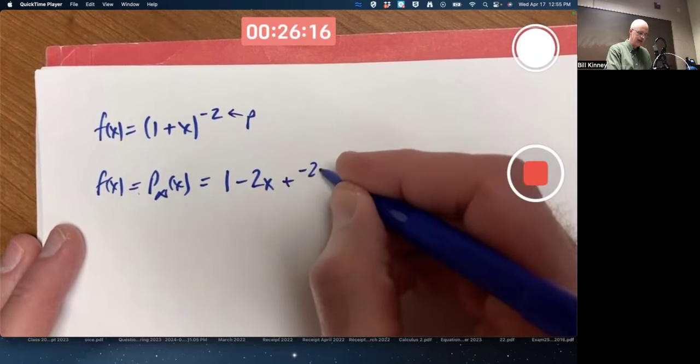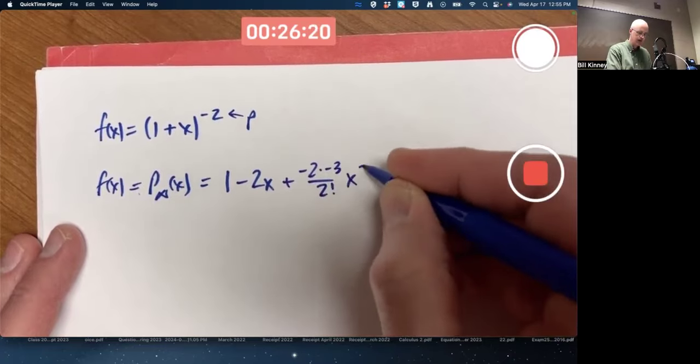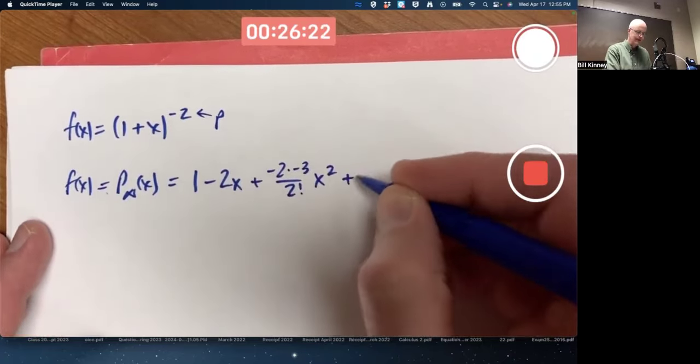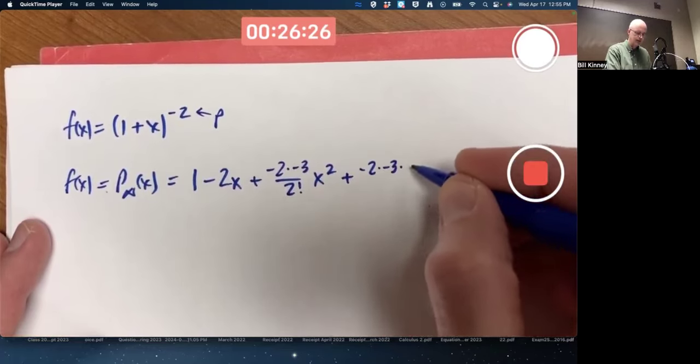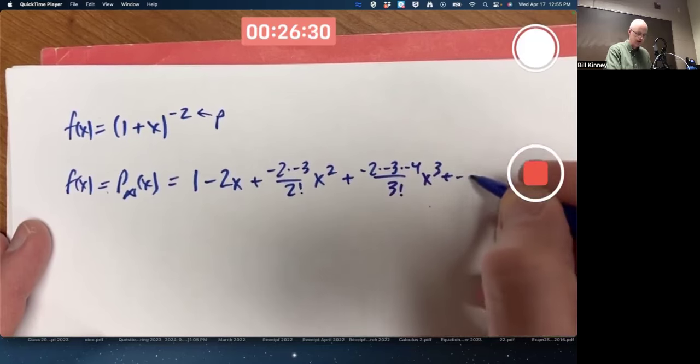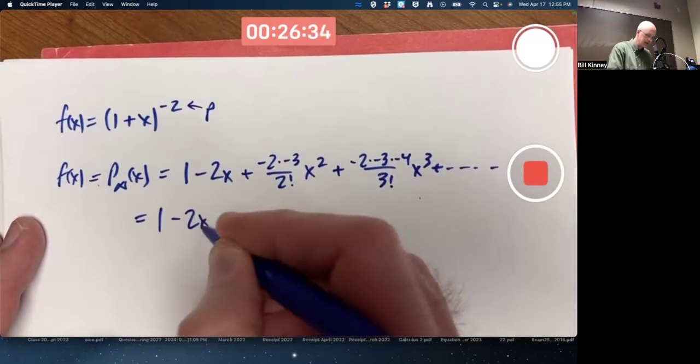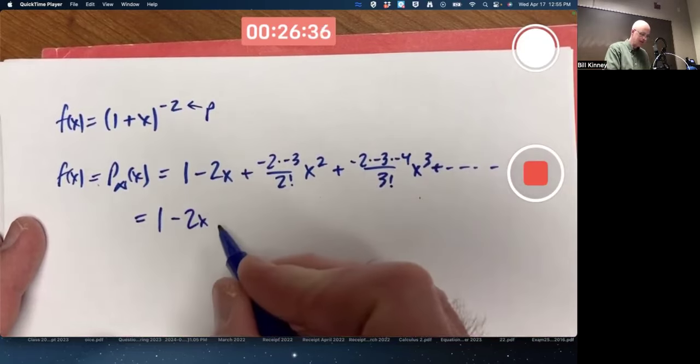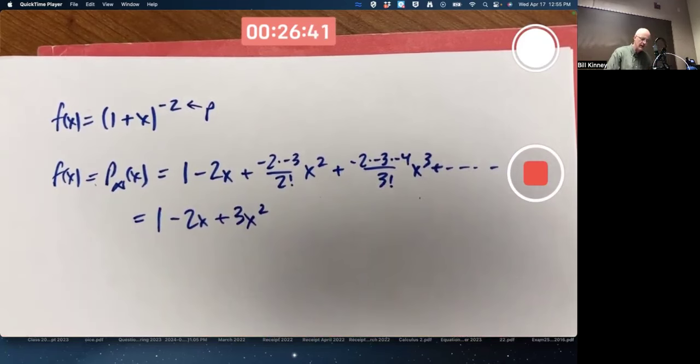Plus p times p minus 1 over 2 factorial times x squared plus p times p minus 1 times p minus 2 over 3 factorial times x cubed, etc. Simplify 1 minus 2x. It's going to be a plus 3x squared, right? The next term there.